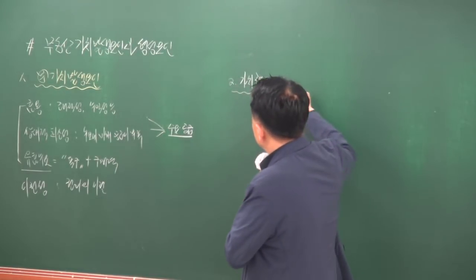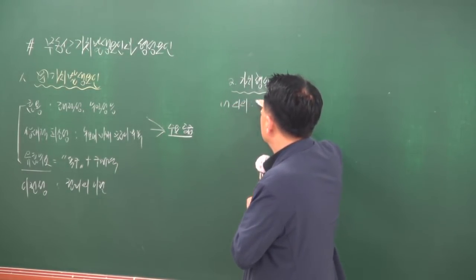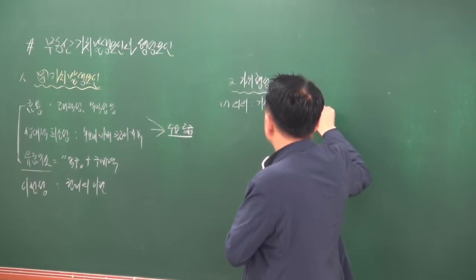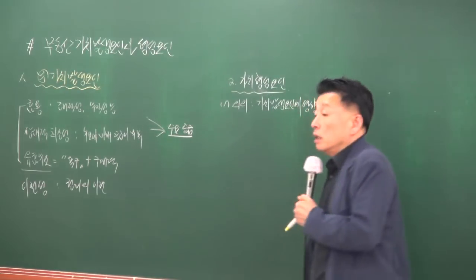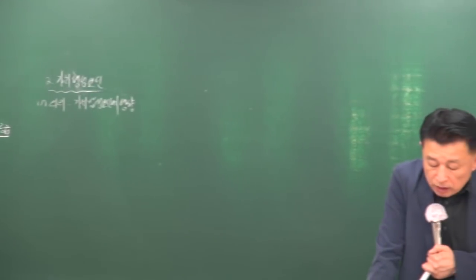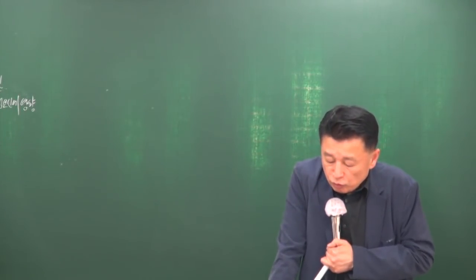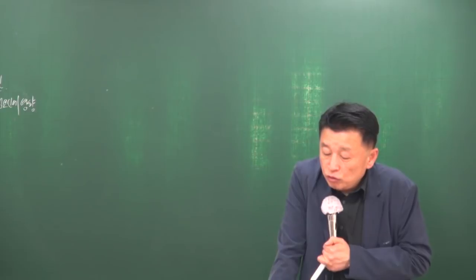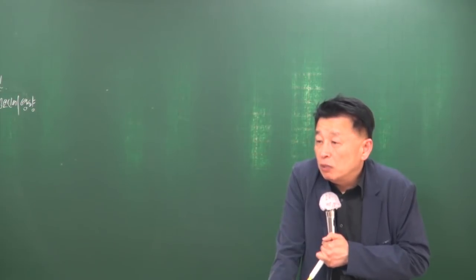가치형성요인이란 가치 발생 요인에 영향을 주는 것을 말합니다. 436페이지 마지막 줄에 보면, 부동산 가격은 효용·희소성·유효수요·이전성 등의 가치 발생 요인의 결합에 의해 경제적 가치가 형성·유지·수정·파괴되는데, 이러한 부분에 영향을 주는 요인을 가치형성요인이라고 합니다.